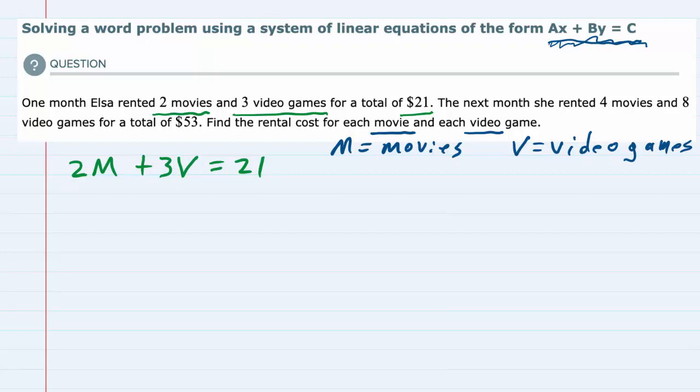From the second sentence, it says that the next month she rented four movies, so that would be four times the cost of one movie, and eight video games, so plus eight times the cost of each video game, and her total this month is $53.